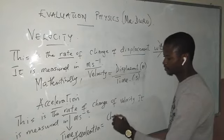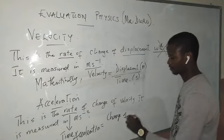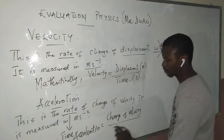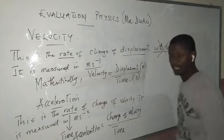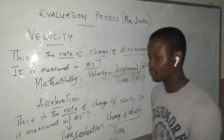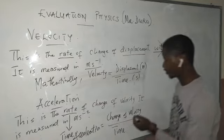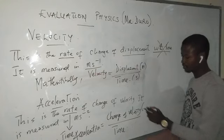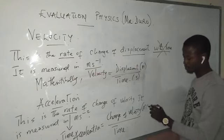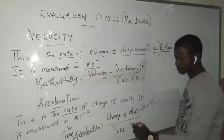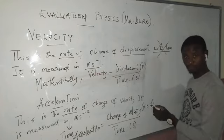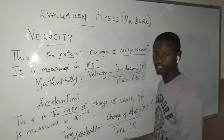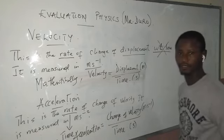Mathematically, acceleration equals change of velocity divided by time. That is how the unit of acceleration is derived: the unit of velocity is meters per second, and time is measured in seconds, so dividing meters per second by seconds gives meters per second squared. Therefore, the unit of acceleration is meters per second squared.